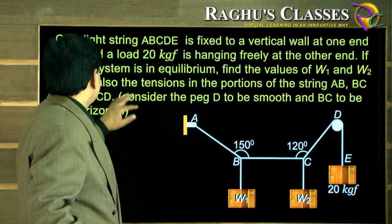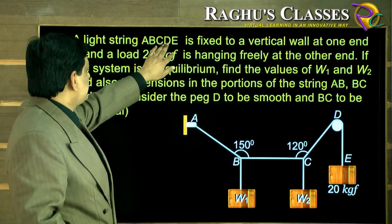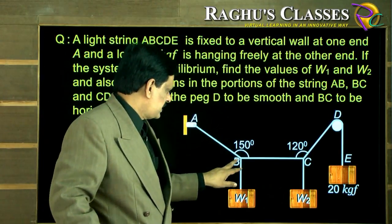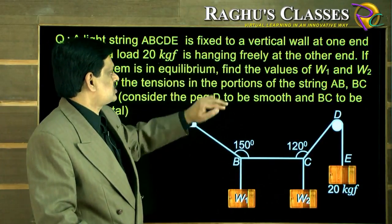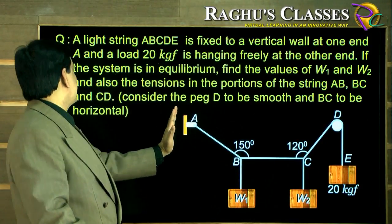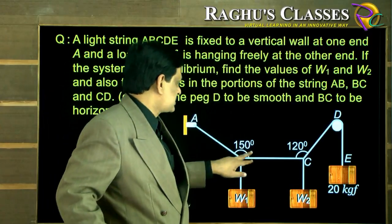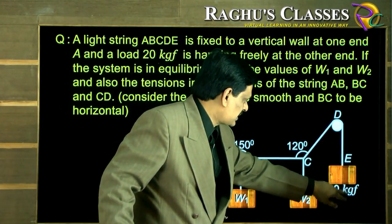Now look at this question here. A light string ABCDE is fixed to a vertical wall at one end A and a load of 20 kgf is hanging freely from the other end E.